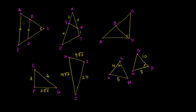We know that these two lines are parallel. If two lines are parallel and we have a transversal, corresponding angles are going to be congruent. So that angle corresponds to that angle right over there. We have one angle in triangle AEC congruent to another angle in BDC, and then we have the shared angle that's congruent to itself in both triangles. So both triangles have a pair of corresponding angles that are congruent, so they must be similar.